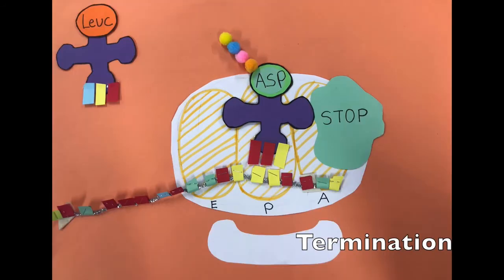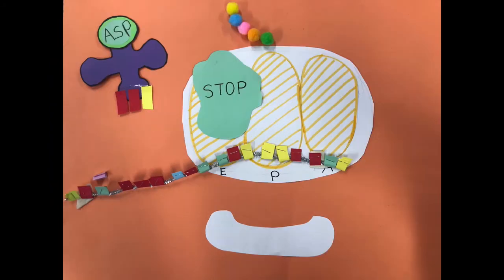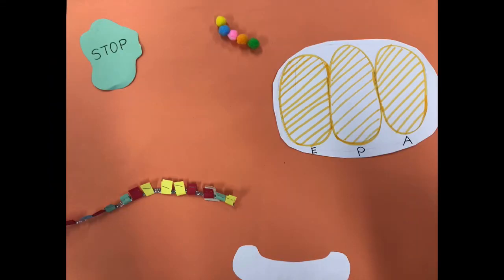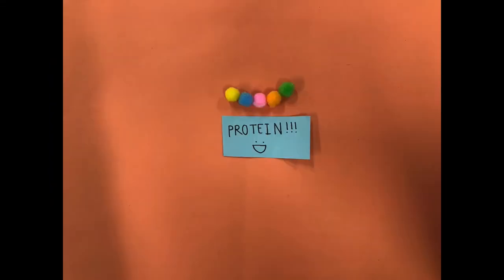This process repeats until it reaches the stop codon. A protein called the release factor binds to the stop codon in the A-site. The release factor causes the chain to separate from the last tRNA. The protein is now complete.